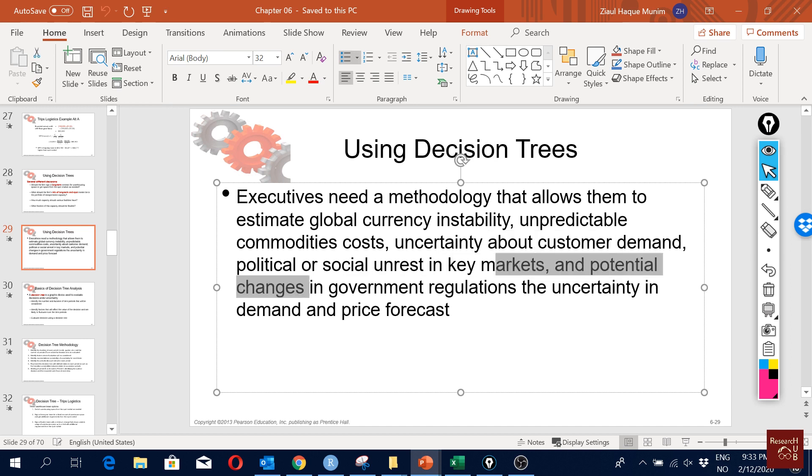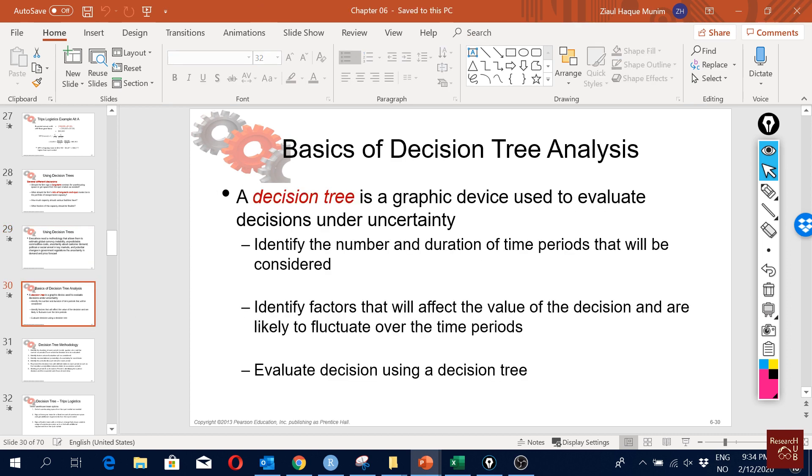It allows executives to estimate global currency instability, unpredictable commodity costs, uncertainty about customer demand, political unrest. We can now consider all these things in estimating the expected profit from a supply chain design.